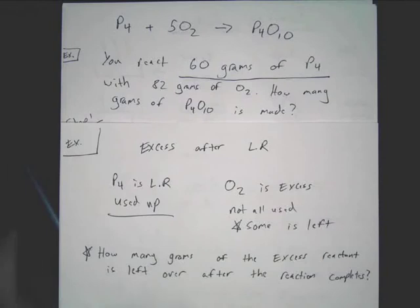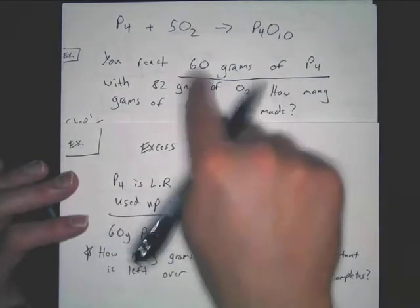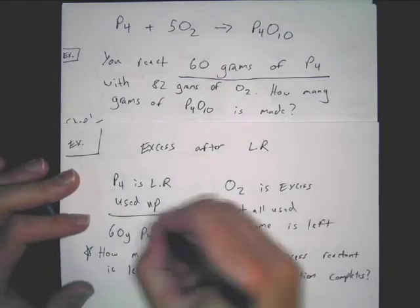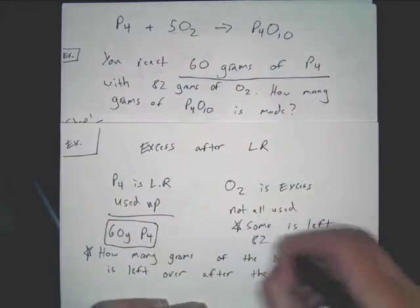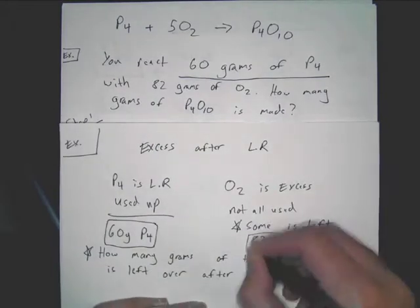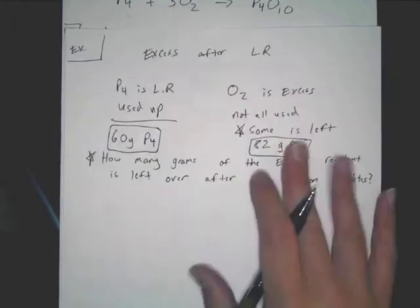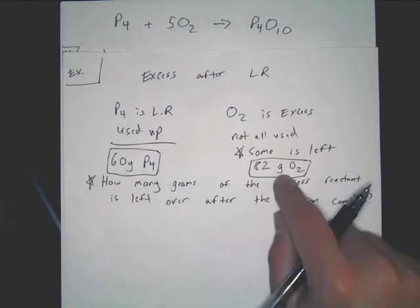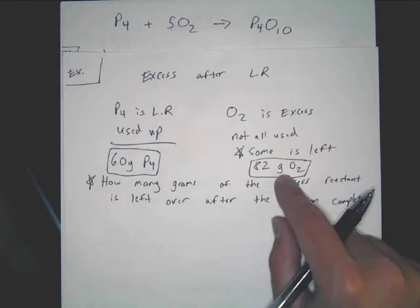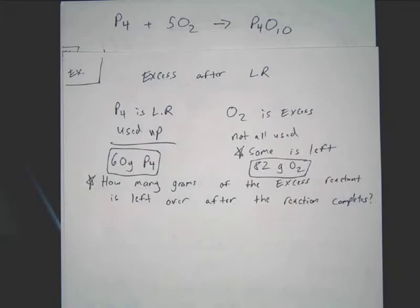So, what we know is this. We know that we have 60 grams of P4 again. We also know that we have 82 grams of O2. Now, when you see all that, you have to remember that this 60 grams, it's gone. It's going to be all used up. The 82, not all gone. Not all used up. So, what you want to figure out is how much O2 was used up. And then you want to find the difference and see how much is left over.